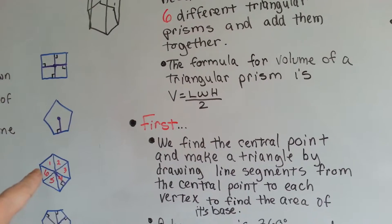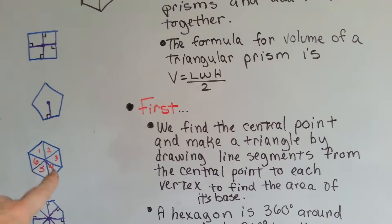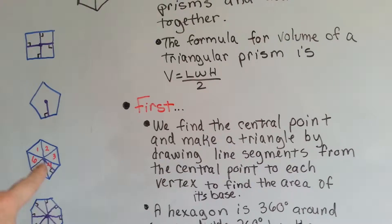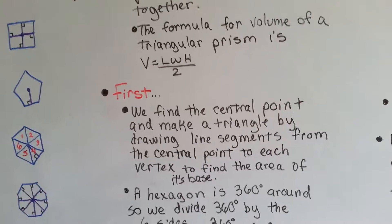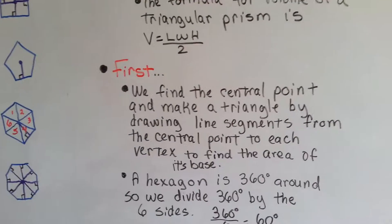Imagine that it's our prism, and we're going to break it into six different triangles. And see how we have the apothem right there? That's going to help us figure out the area of one of the sides, which we need to find the volume.